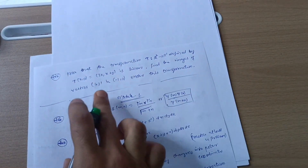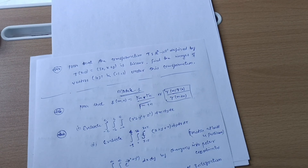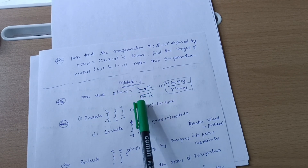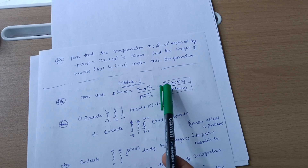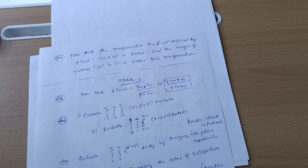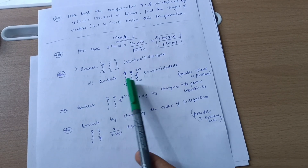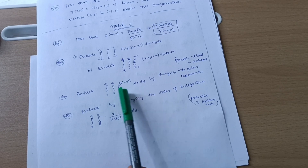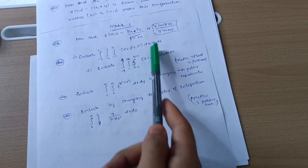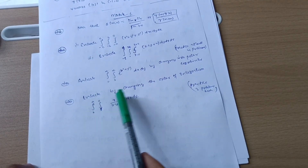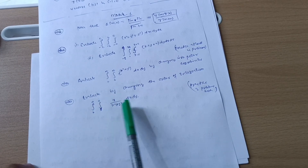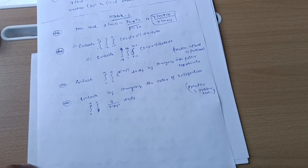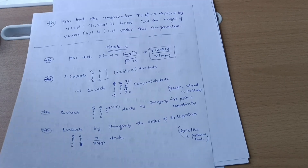If you want one or two questions from Module 1, go through this derivation: prove that β(m, n) = Γ(m)·Γ(n) / Γ(m+n). You can leave the triple integration part if you find it difficult. For double integration, evaluate ∫₀^∞ ∫₀^∞ e^(−(x²+y²)) dx dy by changing to polar coordinates, and evaluate ∫₀^a ∫_y^a x/(x²+y²) dx dy by changing the order of integration. Practice three problems on each of these two double integration concepts — that is enough coverage for Module 1.